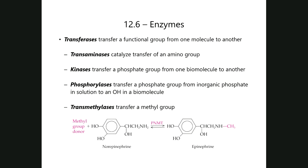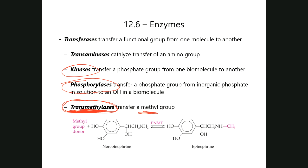To clarify: a kinase takes a phosphate from structure A and puts it on structure B. A phosphorylase looks for phosphate in the surrounding aqueous solution, picks it up, and puts it somewhere else on another structure. Another example is a transmethylase — the name is very suggestive. A transmethylase transfers a methyl group from point A to point B, similar to a kinase but with methyl instead of phosphate.